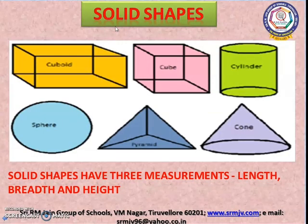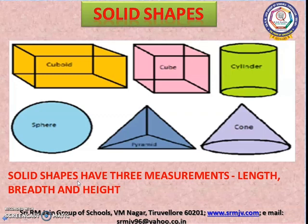Solid shapes. Look at the solid shapes in this picture. They are cuboid, cube, cylinder, sphere, pyramid, and cone. Solid shapes have three measurements: breadth, length, and height.